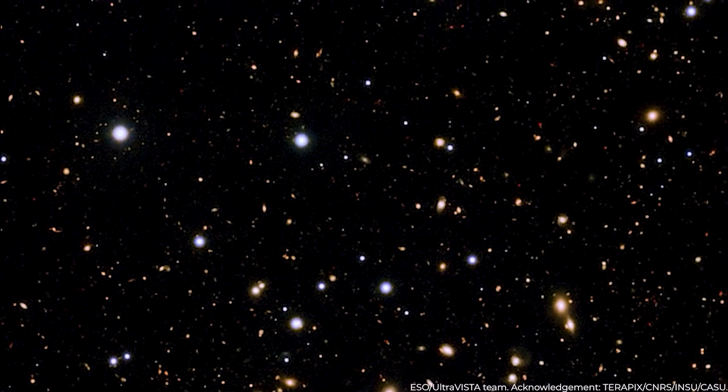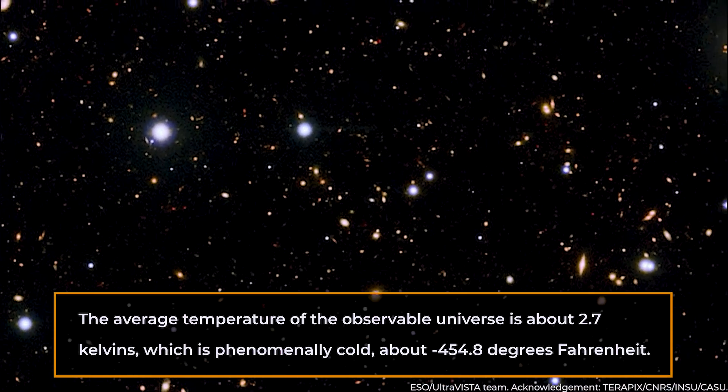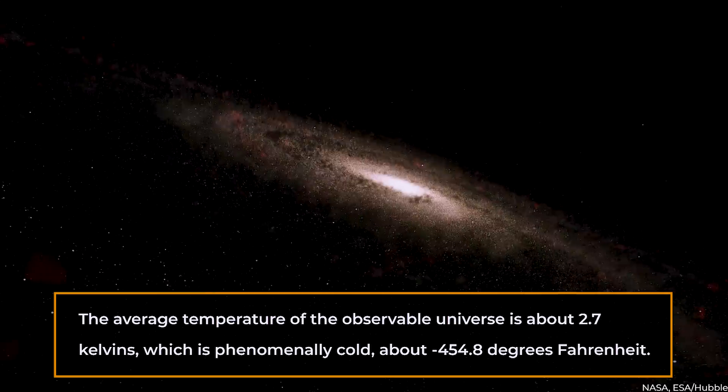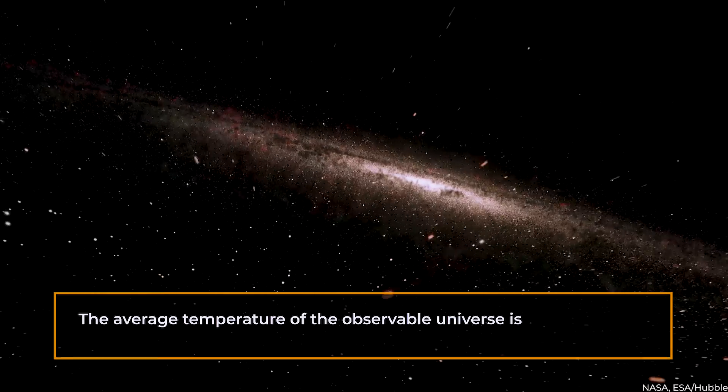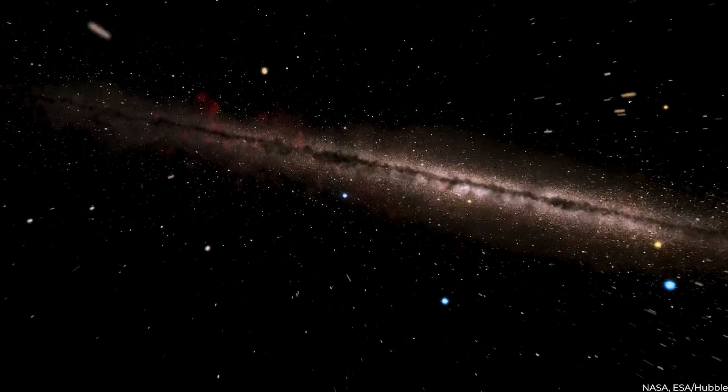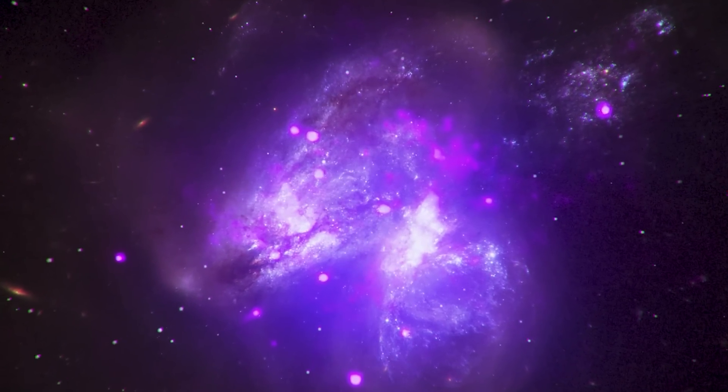Finally, let's talk temperature. The average temperature of the observable universe is about 2.7 kelvins, which is phenomenally cold, about minus 458.8 degrees Fahrenheit. This chilling temperature is a telltale sign of the cosmic microwave background radiation, a sort of afterglow of the big bang, still lingering around after all these billions of years.